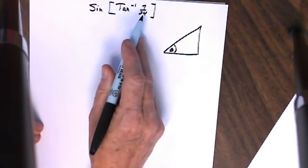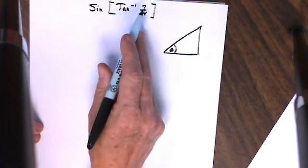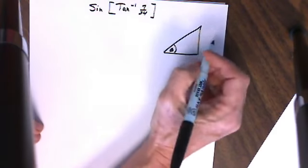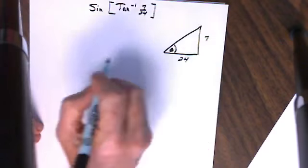Since I know I obtained this ratio with the tangent function by comparing the length of the side opposite the angle to the length of the side adjacent to the angle, I'm going to label my triangle 7 for this side and 24 for this side.